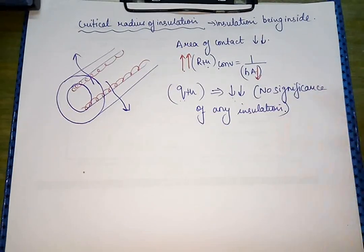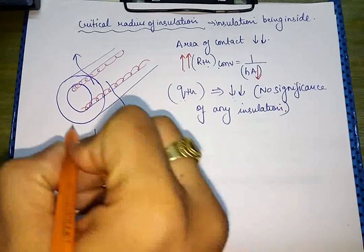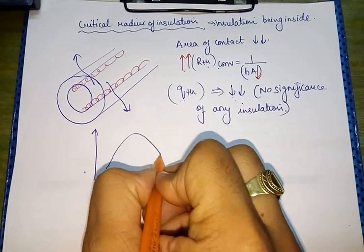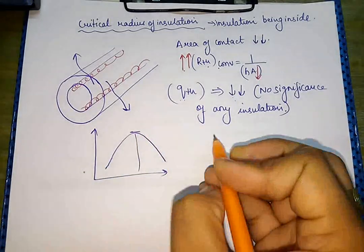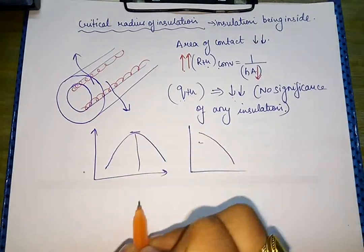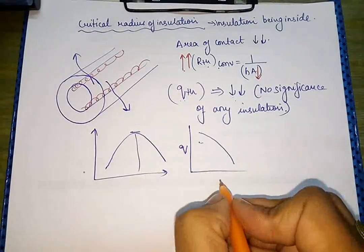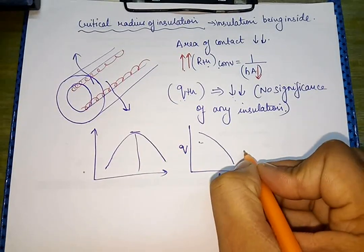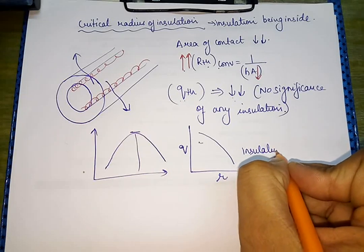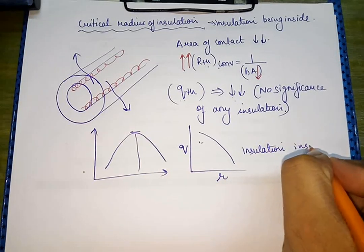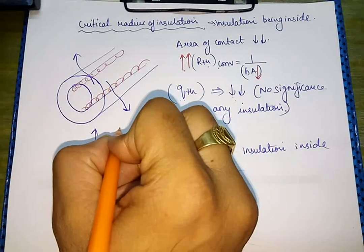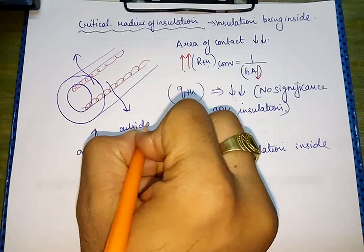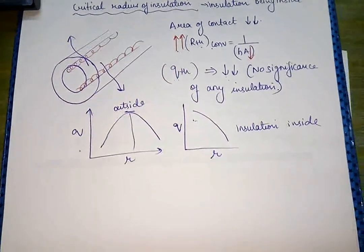If we put insulation inside, the critical radius has no significance. In the earlier cases we studied, the rate of heat transfer would first increase, reach a maximum, and then decrease. But in this inside-insulation case, it will only decrease — it will not increase at all. This is the q versus r graph for insulation inside, compared to when the insulation is used outside.